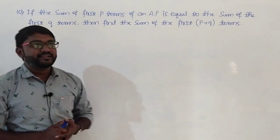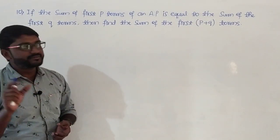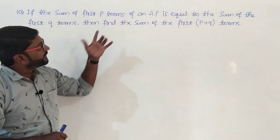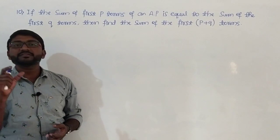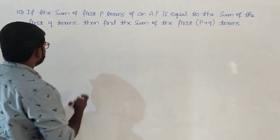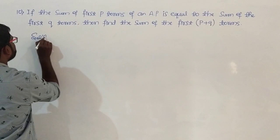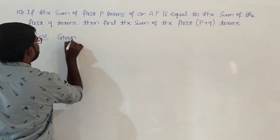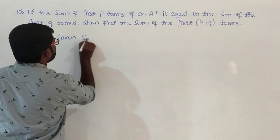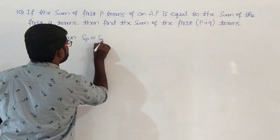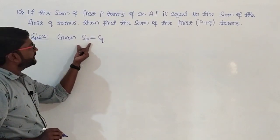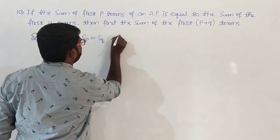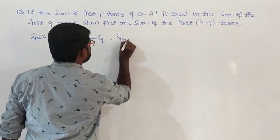The 10th problem: if the sum of the first p terms of an AP is equal to the sum of the first q terms, then find the sum of the first p plus q terms. Given: Sp equals Sq, and we will have to find S of p plus q.